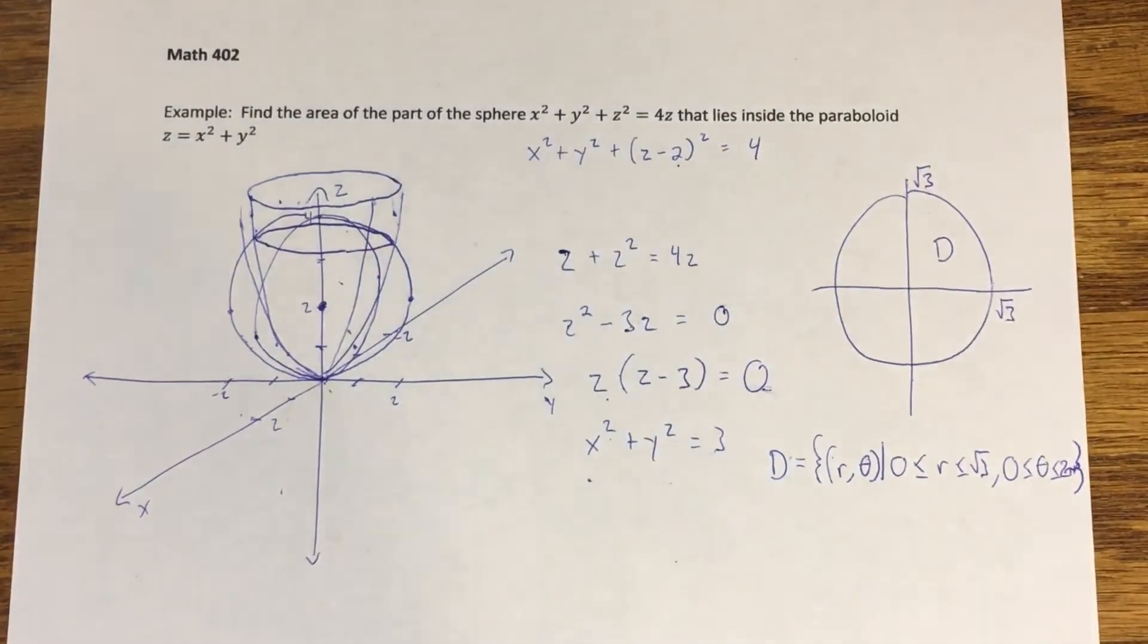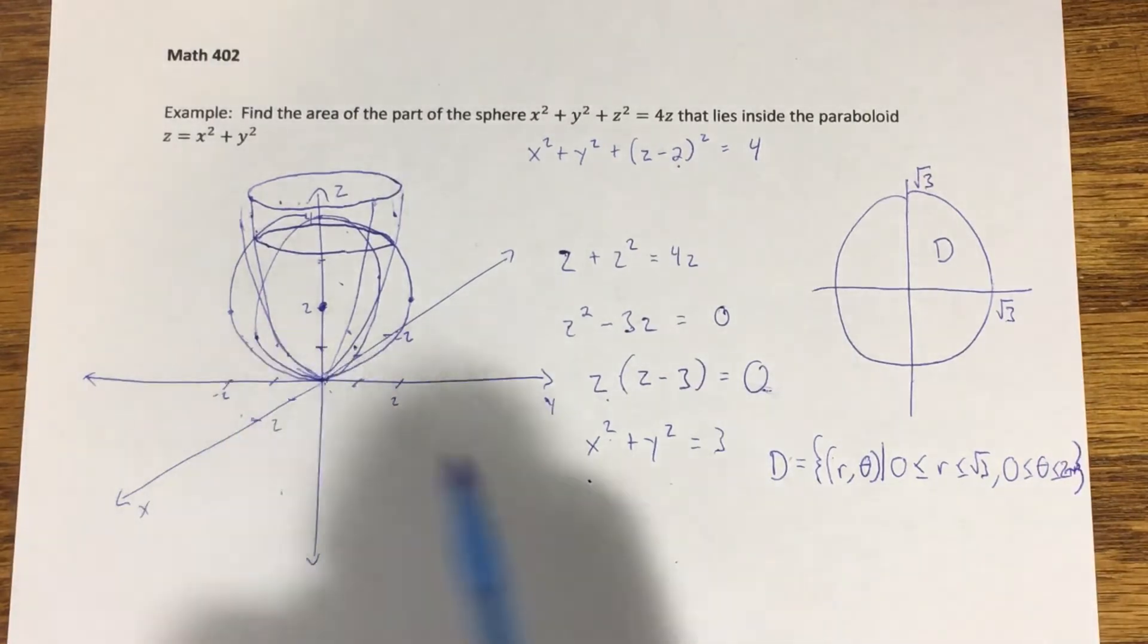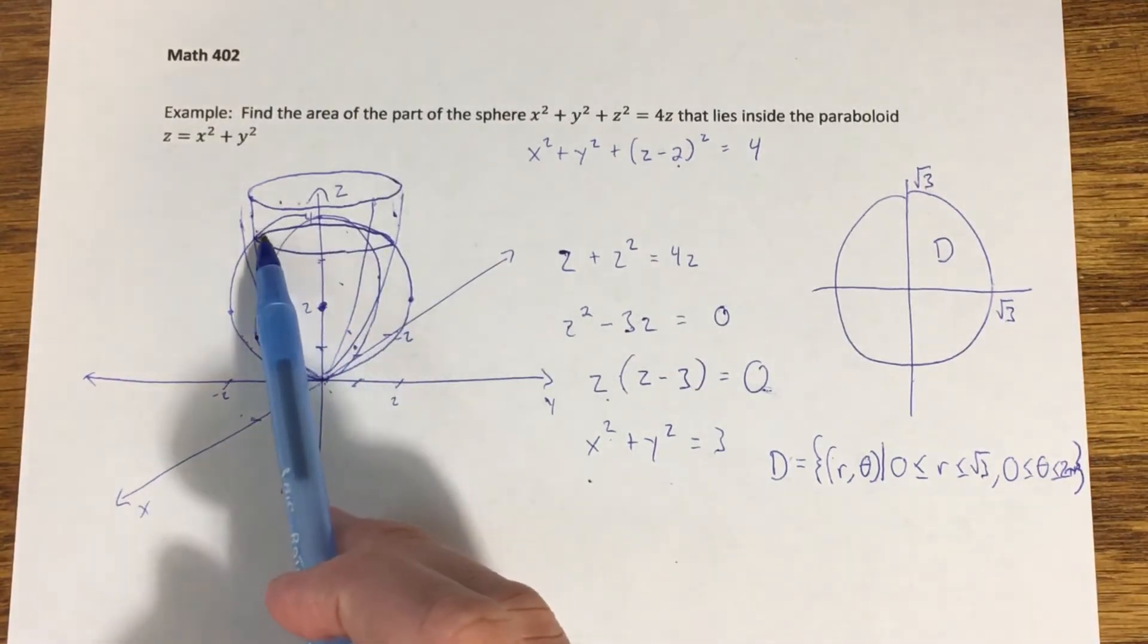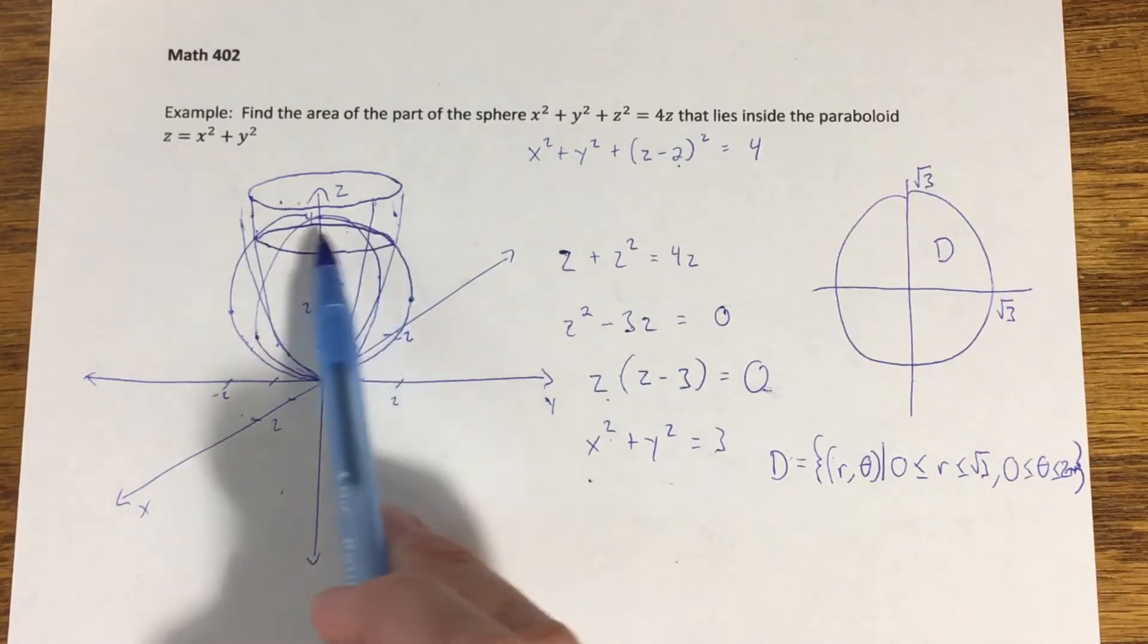Okay, so this is where we left off in this last example. What we're looking for is the area of the surface that comes from slicing through this sphere through the plane z equals three.